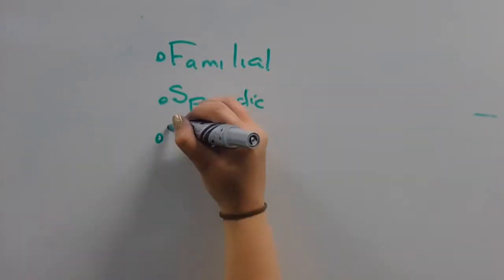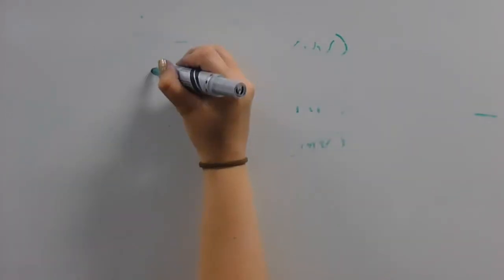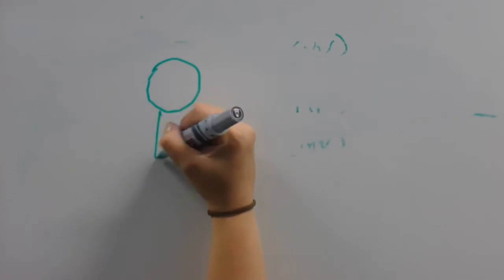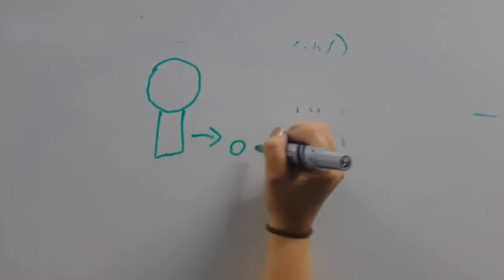There are three main types of CJD: familial, sporadic, and infectious. Familial is when CJD is passed on as a hereditary form through mutation in the prion protein gene. If the gene is inherited from a parent, the child will get the disease.